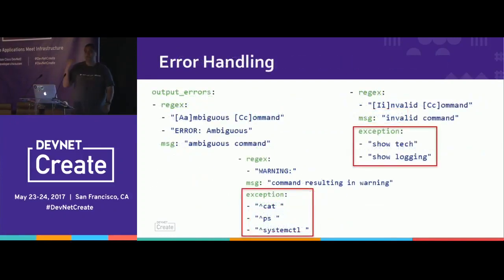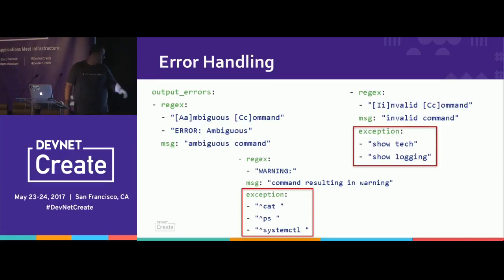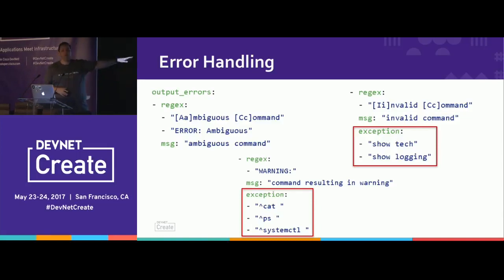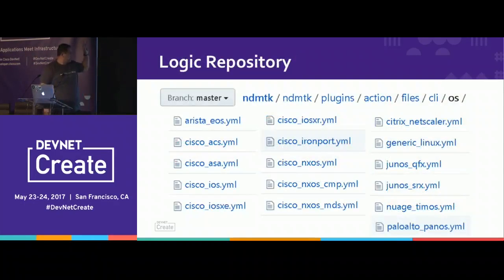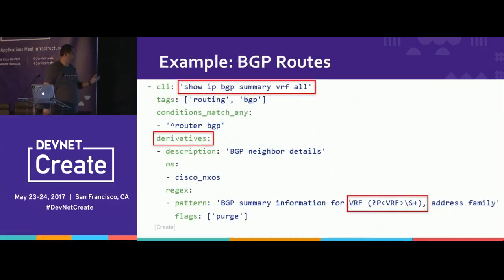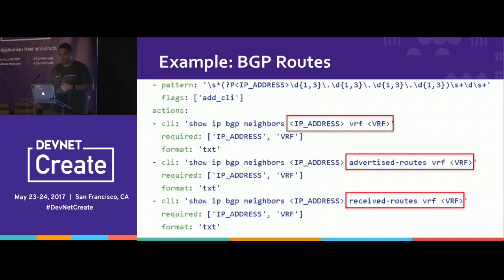Error handling: I describe what the output of a command would look like when it fails — for example, if I see a warning, that's a failure. Some commands inherently show failure messages; 'show tech' on Cisco devices collects many commands and some of them will fail. Here's the algorithm: you take configuration and basic command sets, then create many derivatives and dig deeper. All operating systems with their commands are represented, and here's an example with 'show ip bgp route' — there are derivative patterns that go with each match.